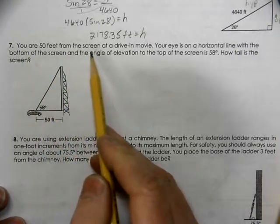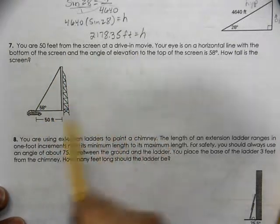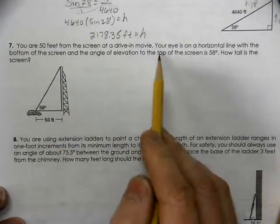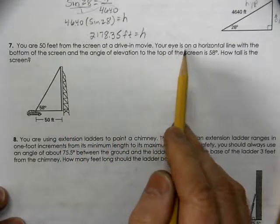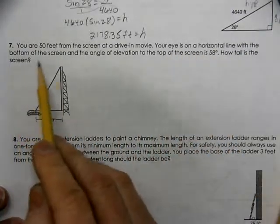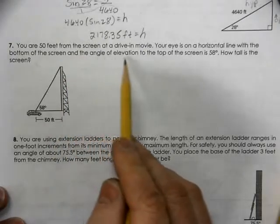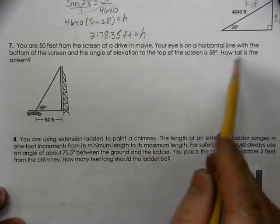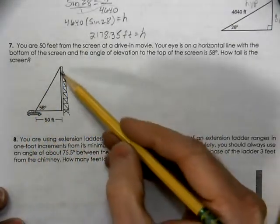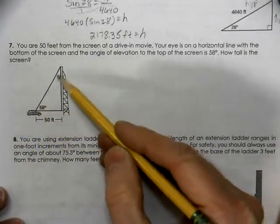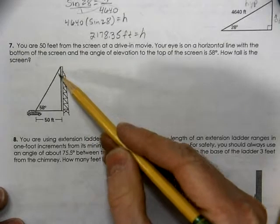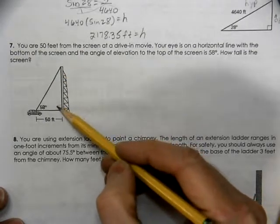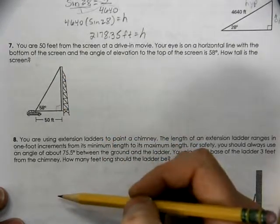You are 50 feet from the screen at a drive-in movie theater. Your eye is on the horizontal line with the bottom of the screen, and the angle of elevation is 58. How tall is the screen? So, we make a triangle, and the screen is standing up perpendicular, so we know this is a right triangle.